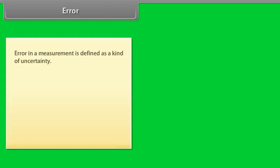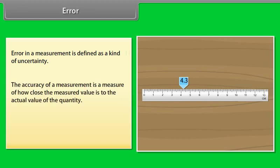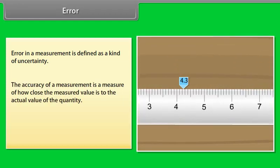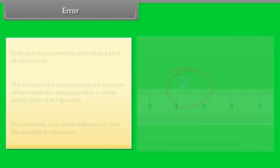Error. The result of every measurement by any measuring instrument contains some uncertainty. Error in a measurement is defined as a kind of uncertainty. The accuracy of a measurement is a measure of how close the measured value is to the actual value of the quantity.